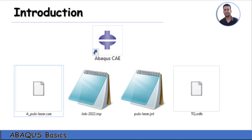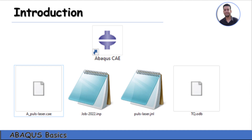Now some basic notes about Abaqus. When you start Abaqus for the first time you will find the Abaqus CAE icon. After you click and run your simulation you will get some files as shown here. The first extension is called .CAE, which means all pre-processing can be done with this file, and you can also open your project directly from the .CAE file.